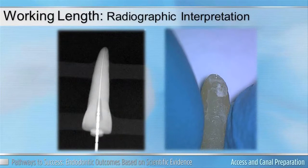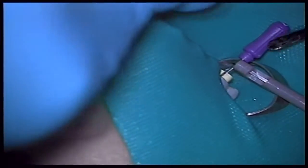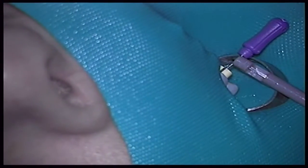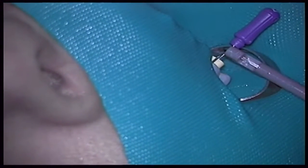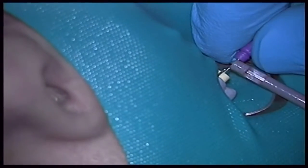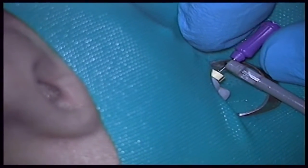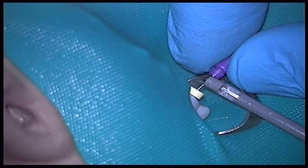We also have to remember, if our file does go past that reference point, we don't want to just pull it back inside the tooth. We want to very slowly turn it counter-clockwise because the flutes are engaging in the clockwise rotation. So a very gentle motion in a counter-clockwise rotation will advance the file back into the canal so that we can obtain an accurate working length.